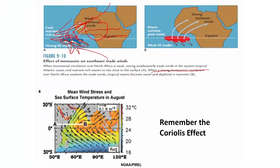On the other hand, when you have a weak monsoon, you have less Ekman divergence and reduced upwelling. So you have warmer sea surface temperatures, reduced upwelling, and reduced biological production. The change will appear in the sediments.